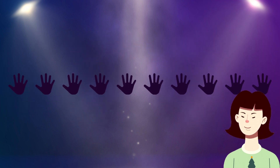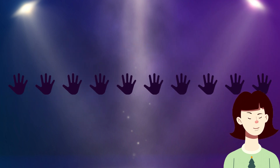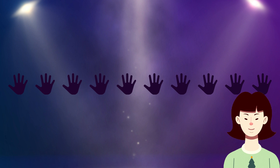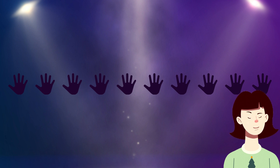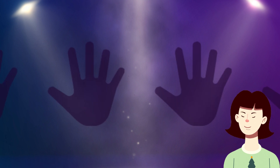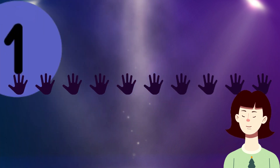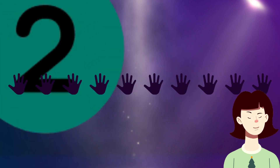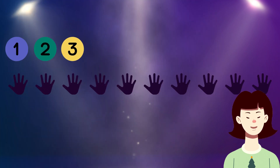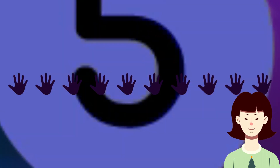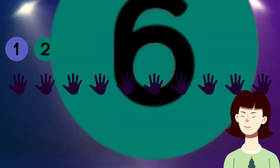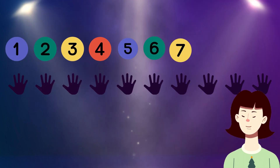Dear kids, there are 10 symbols that represent hands. Please tell me how many of them are filled in black color. Yes, 10 filled in black color. Let's count together: 1, 2, 3, 4, 5, 6, 7, 8, 9, 10.